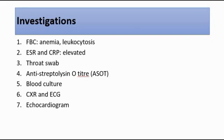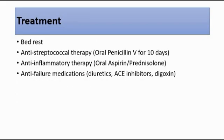For treatment, the aims are to suppress the inflammatory response, minimize cardiac damage, provide symptomatic relief, and eradicate the pharyngeal streptococcal infection, which is the primary cause. We can ask the patient to bed rest and restrict their activity until the acute phase reactants return to normal. We can also give antistreptococcal therapy, which is oral penicillin V for 10 days.